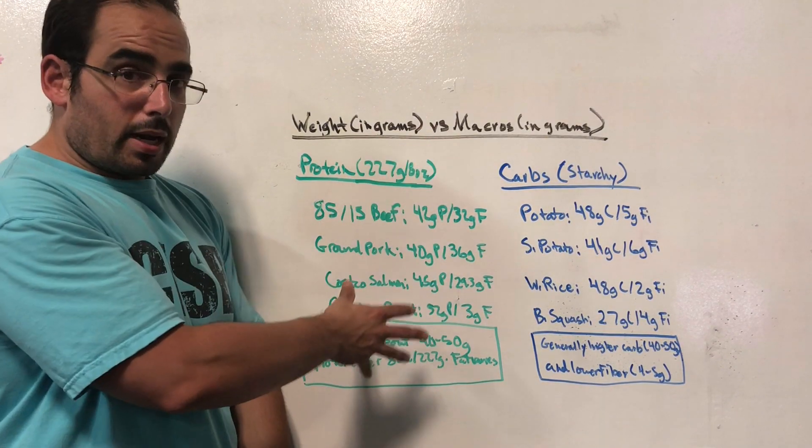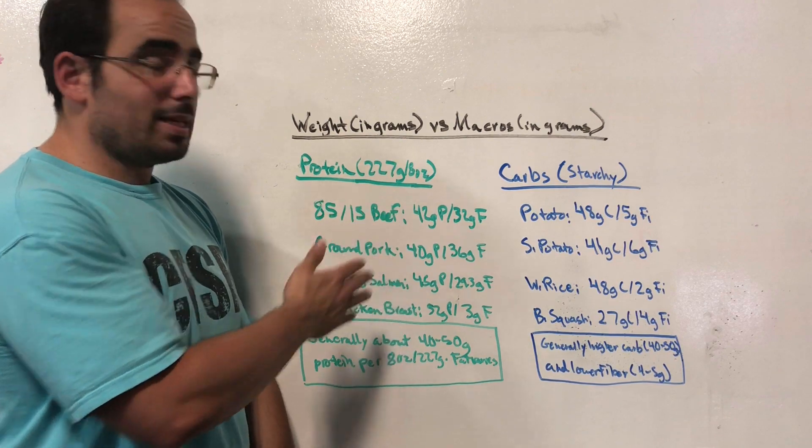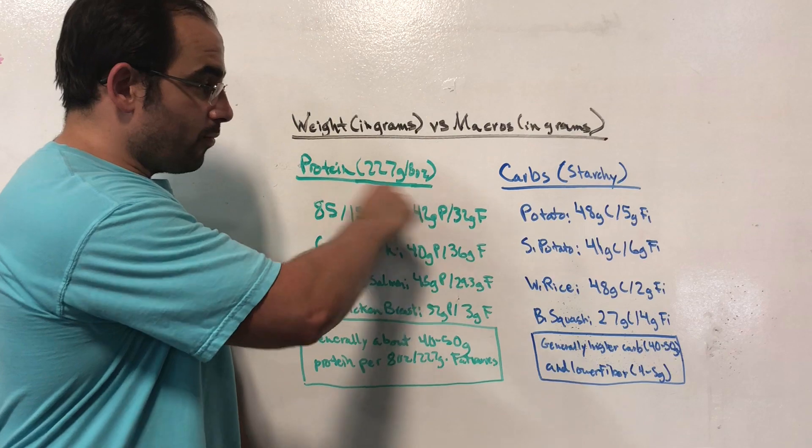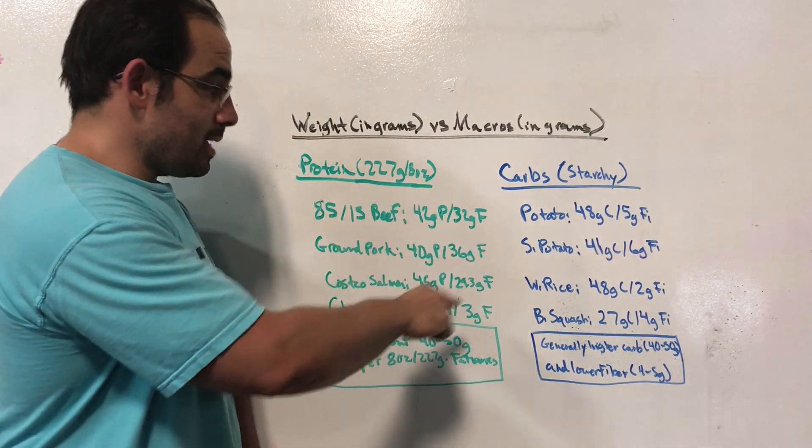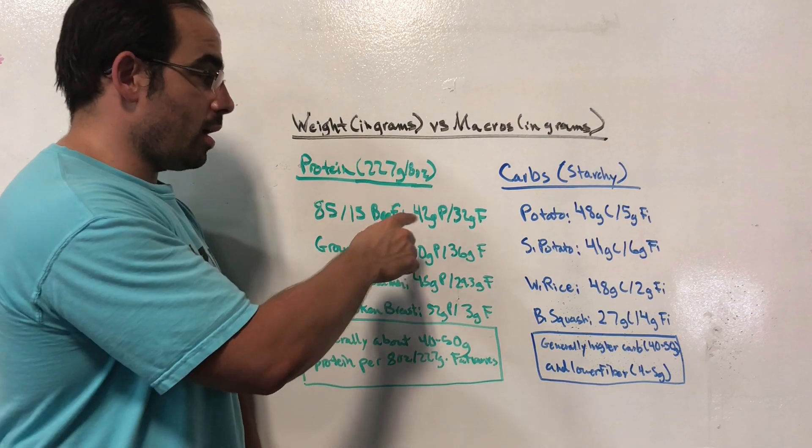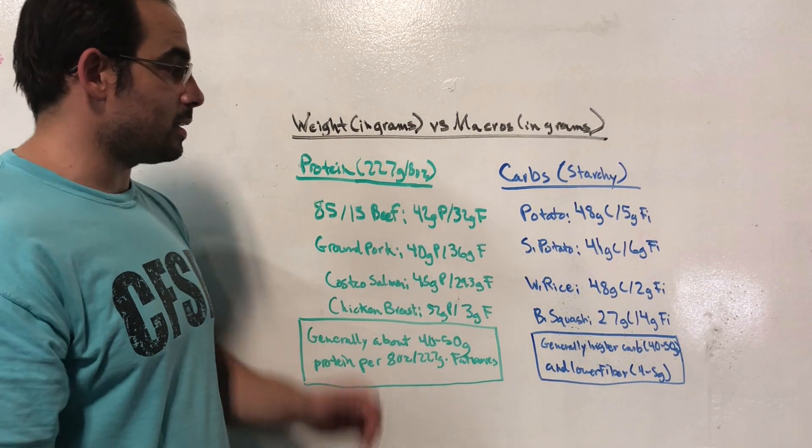But as you can see already, the amount of protein in each varies and the amount of fat in each varies. So the weight of the food does not equal the amount of protein in the food and or the amount of fat in the food. So let's just take some examples.